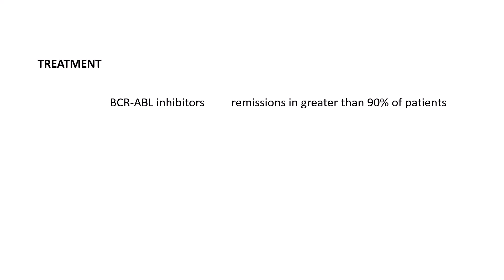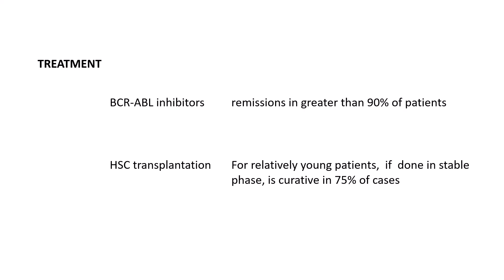How do you treat CML? Because CML involves uncontrolled activation of tyrosine kinase, you treat with tyrosine kinase inhibitors — specifically BCR-ABL inhibitors. If you treat patients with BCR-ABL inhibitors, remission is seen in greater than 90% of patients. Hematopoietic stem cell transplantation can be considered if the patient is relatively young, and when done in the stable phase it is almost curative in around 75% of cases.